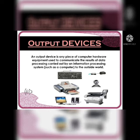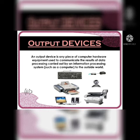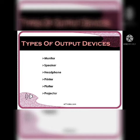An output device is any piece of computer hardware equipment used to communicate the result of data processing carried out by an information system. Some types of output devices are monitor, speaker, headphone, printer, plotter, and projector.